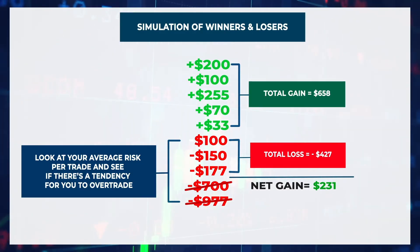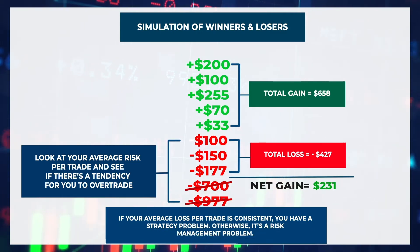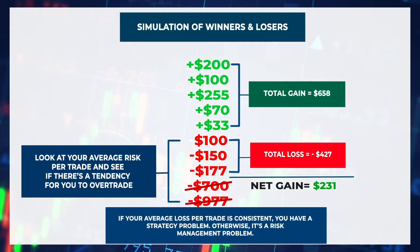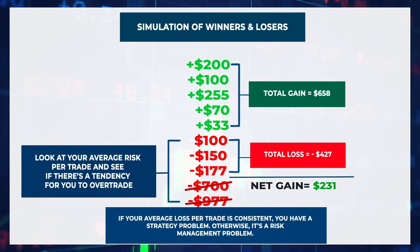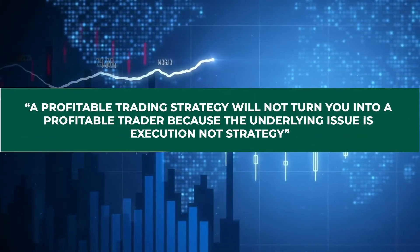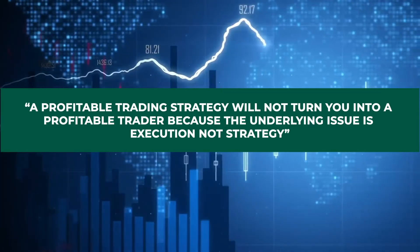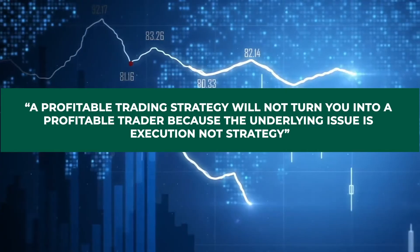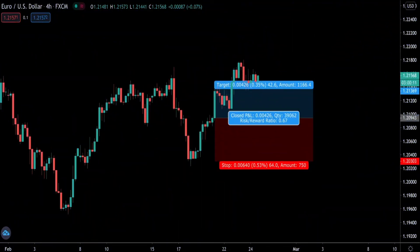Look at your average risk per trade and see if there's a tendency for you to over-trade. If your average loss per trade is consistent, then you have a strategy problem, which is pretty easy to fix. But if your loss per trade isn't consistent, then you have to work on being disciplined and managing your risk better. In that case, a profitable trading strategy will not turn you into a profitable trader, because the underlying issue is execution, not strategy.